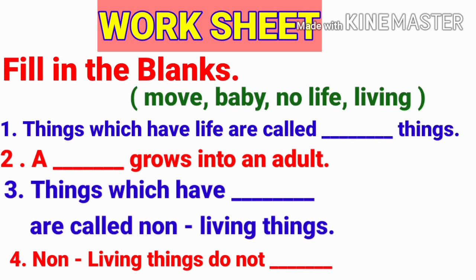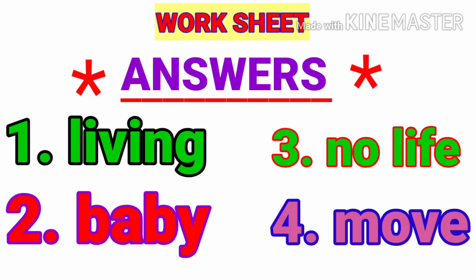Worksheet: fill in the blanks. First: things which have life are called dash things. Second: a dash grows into an adult. Third: things which have dash are called non-living things. Fourth: non-living things do not dash. Answers: one is living, two is baby, three is no life, four is move.